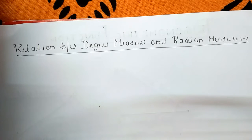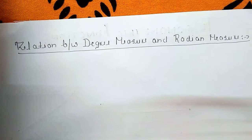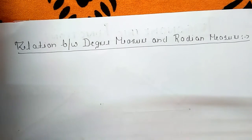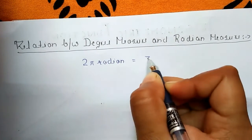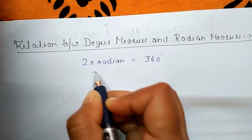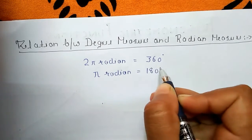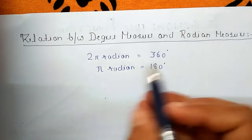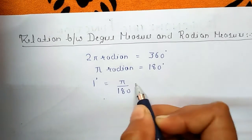We know that the circumference of a circle of radius one unit is 2π. So one complete revolution of the initial side subtends an angle of 2π radians, and its degree measure is 360 degrees. Therefore, 2π radian equals 360 degrees, π radian equals 180 degrees, and 1 degree equals π over 180 radian.